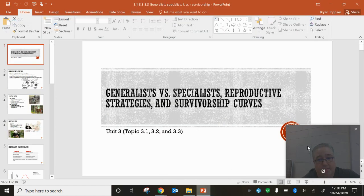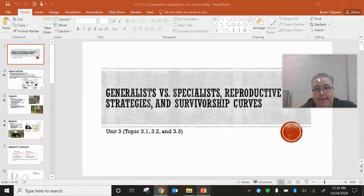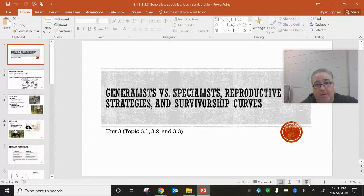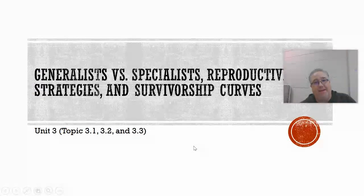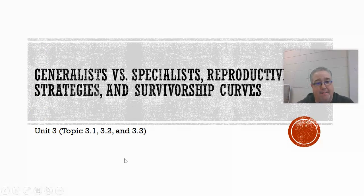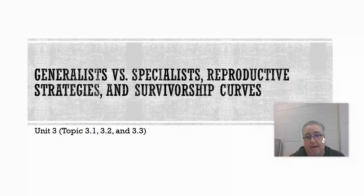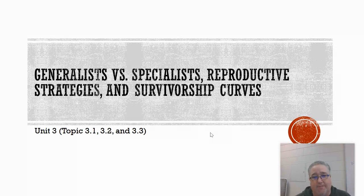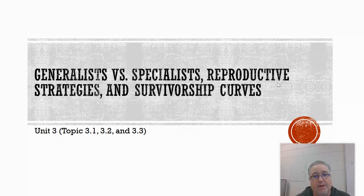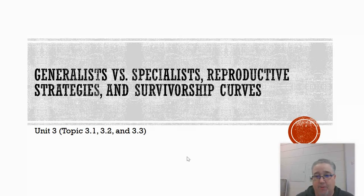AP Environmental Science students, Mr. Trappier here again. We're going to begin Unit 3 today. At the beginning of this unit there are a couple of topics that are kind of short and they all blend together really well, so I'm going to combine all three into the same lesson. We'll talk about generalists and specialists, different reproductive strategies, and also something called survivorship curves, which I will show you in this lesson.